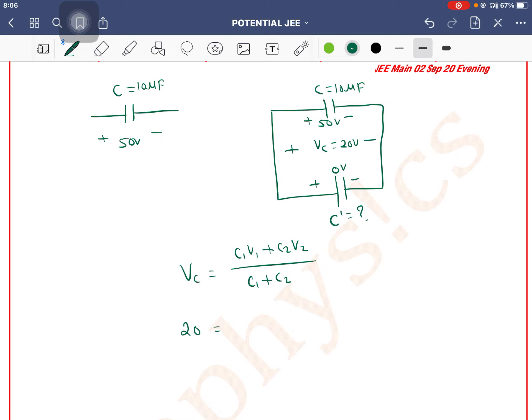20 equals C1 (10 microfarad) into V1 (50), plus C2 (value not known) times V2 (which is 0), divided by 10 microfarad plus C'.